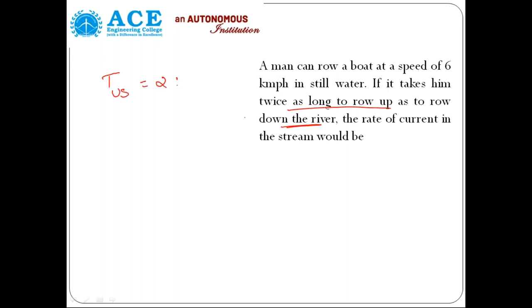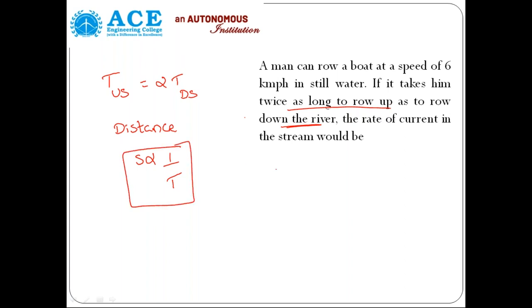The time taken to row upstream is nothing but twice the time taken to go downstream. Here the distance is the same. When distance is same, speed is inversely proportional to time. Here upstream is twice downstream in terms of timing, then in terms of speed, speed of downstream is nothing but twice speed of upstream.